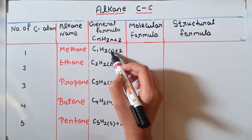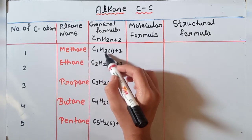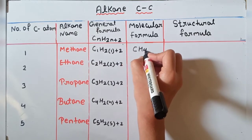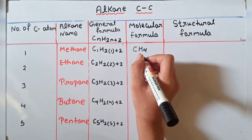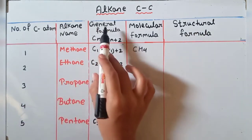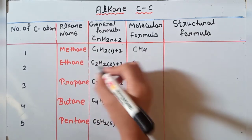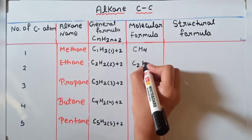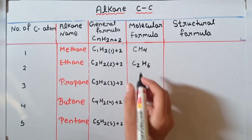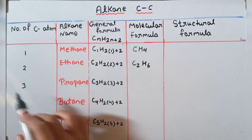So n ki jagah par hum 1 put karenge. C1H(2×1+2) = CH4. For ethane, n=2, so molecular formula: C2H(2×2+2) = C2H6. Molecular formula kya ban jayega yahan par — C2H6. Okay, this is the molecular formula for ethane.